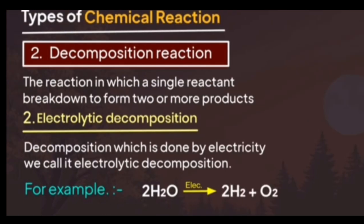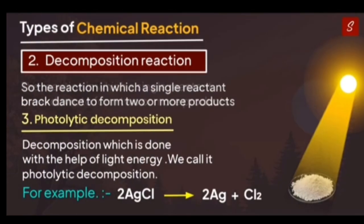Electrolytic decomposition is decomposition done by electricity. For example, when H₂O passes through an electrolyte, it gives H₂ and O₂. A single reactant produces two or more products — this is called electrolytic decomposition.